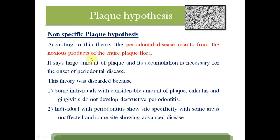We need to learn two plaque hypotheses. The non-specific plaque hypothesis says periodontal disease results from the noxious products of the entire plaque flora, without highlighting any specific bacteria. It states that a larger amount of plaque accumulation is necessary for the onset of periodontal disease. This theory was discarded because some individuals with considerable plaque, calculus, and gingivitis do not develop destructive periodontitis, while individuals with periodontitis show site-specific patterns with some areas unaffected.